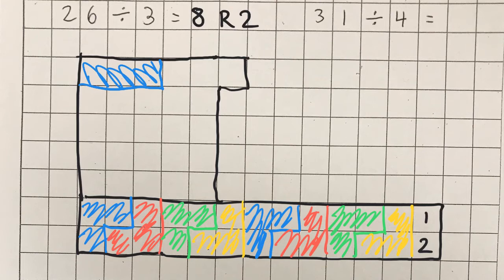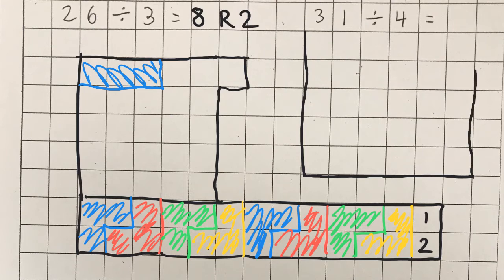Next up I have 31 divided by 4. 31 is even trickier because it's a prime number, so I can't actually put it into a rectangle unless I were to make a rectangle of 1 by 31. So I'm going to do 6 times 5, which is 30, and just add one more extra box. So now I have 31 boxes and I'm putting this one into groups of four.